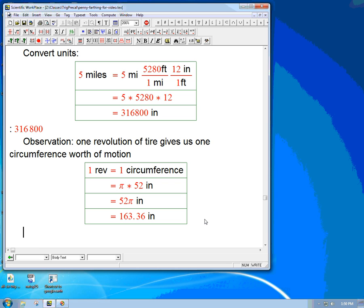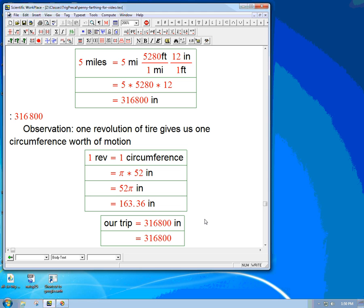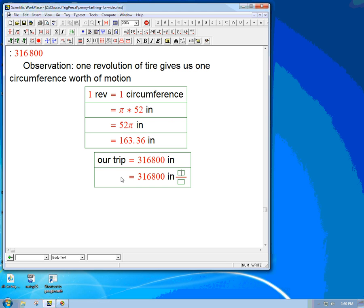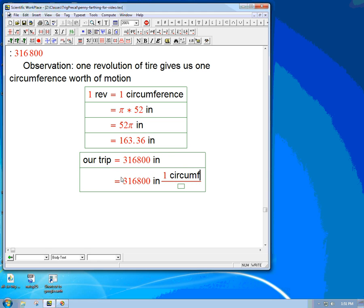So our trip was equal to 316,800 inches. We can really sort of just think of this as another unit conversion. We've now got a new unit called one of our wheel circumferences. So we can just go ahead and multiply by one again. We want it to come out in terms of circumferences, and we know that's equal to 163.36 inches. A little under 2,000, about 1939, so about 1,939 revolutions.